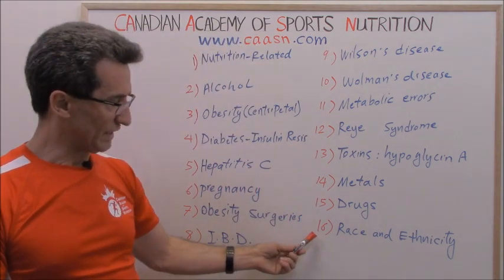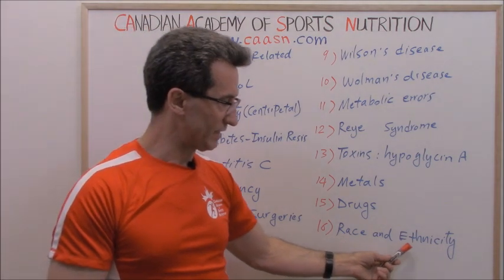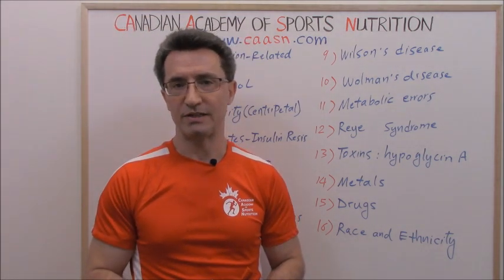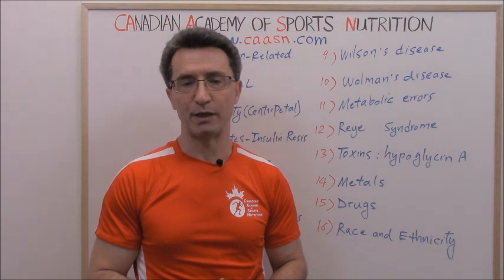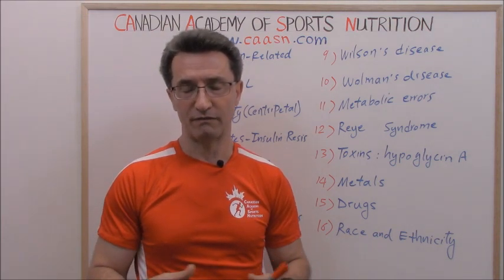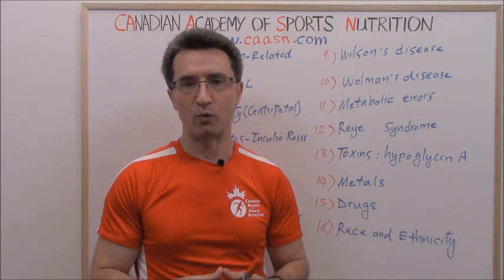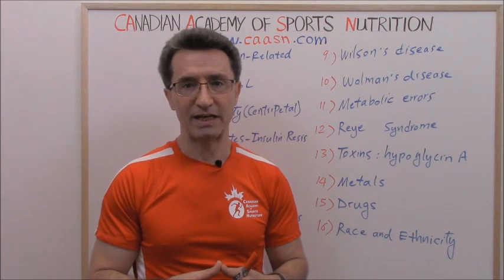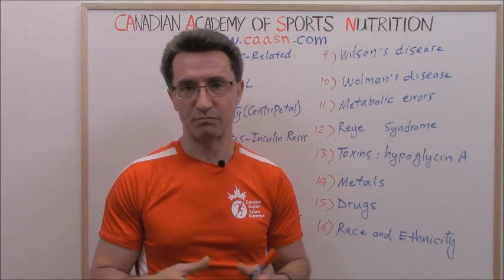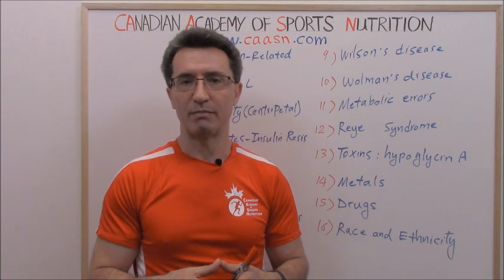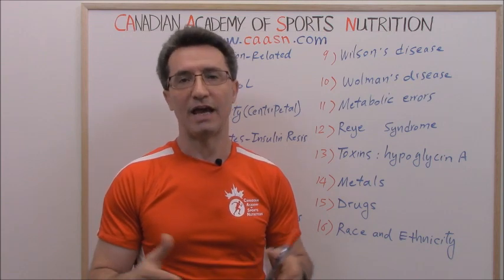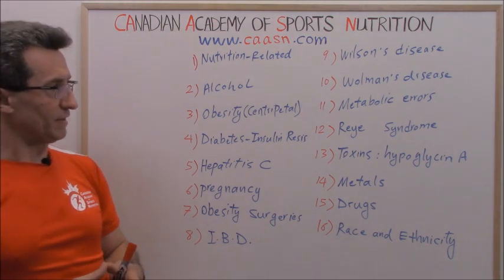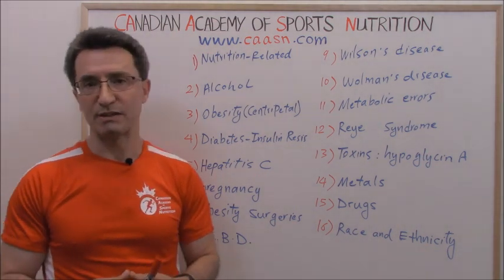Number sixteen: race and ethnicity. Race and ethnicity play an important role in developing fatty liver. For example, fatty liver is relatively low among African Americans, but it is very high among Americans of Hispanic ancestry.